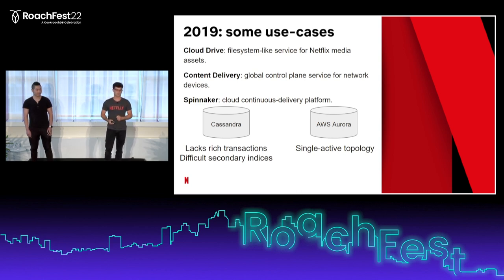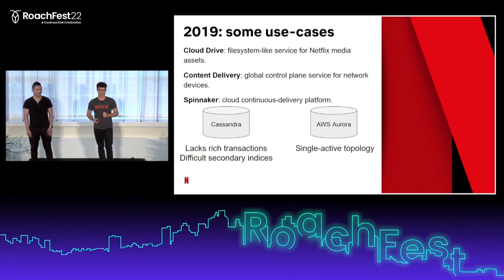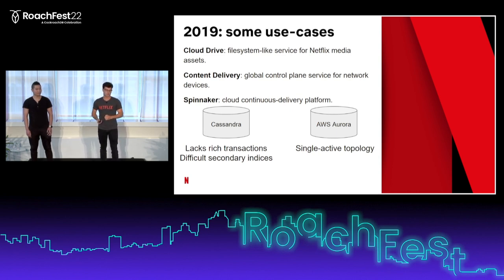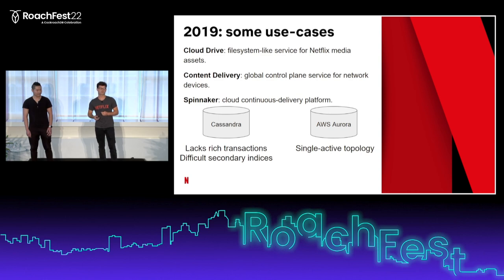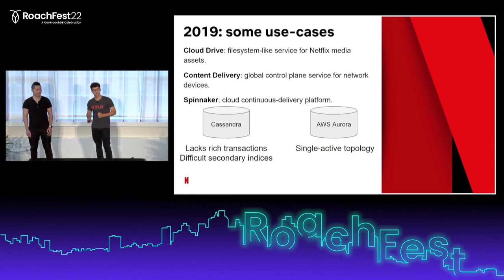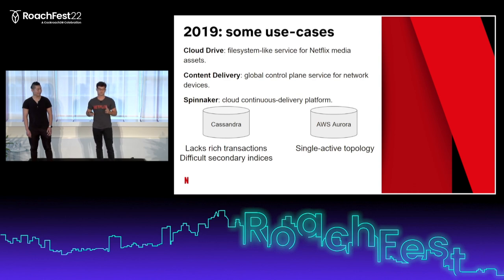Content delivery — Netflix built its own CDN called Open Connect, and we needed a control plane service to manage network devices around the world. Also Spinnaker, our continuous delivery platform on the cloud. These were global services that needed consistent transactions at times, and that was problematic with Cassandra because it doesn't have rich transactions — only lightweight transactions, which are very limited. Secondary indices in Cassandra are also very finicky and in most cases don't work.